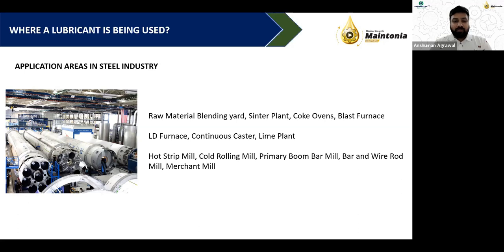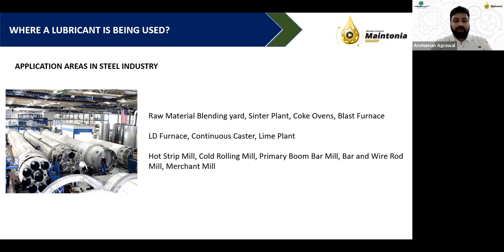For mills or rolling mills, higher viscosity oils like 600 CST or even 1000 CST gear oils are used. For furnaces, sinker plants, or coke ovens, hydraulic applications are critical. When hydraulic pressure does not perform well, the associated functions of these equipment also start misperforming.